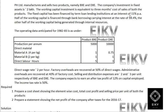The term loan carries an interest of 11%. Half of the working capital is financed through bank borrowing carrying interest at the rate of 19.4%. The other half of the working capital has been generated through general resources. The operating data anticipated for 1982-83 is as follows: product BXE output per annum is 5,000 units, and product DXE is 10,000 units.